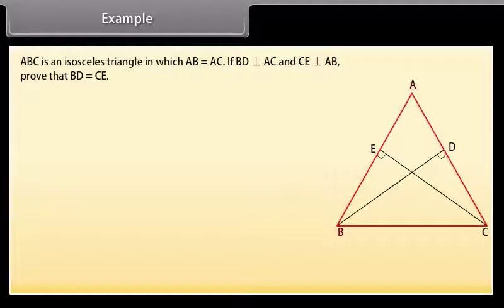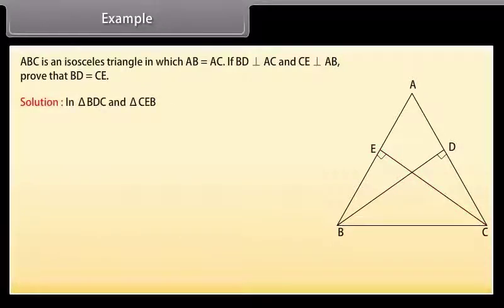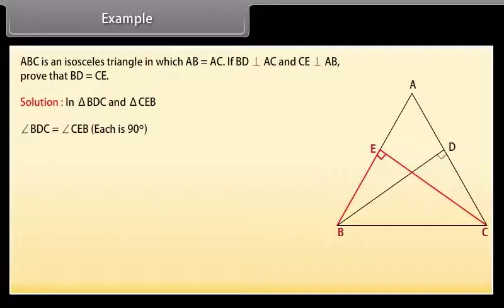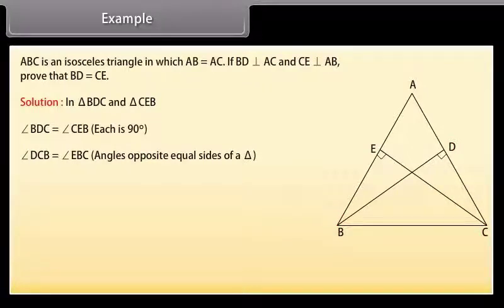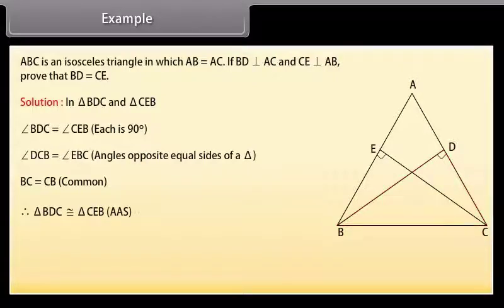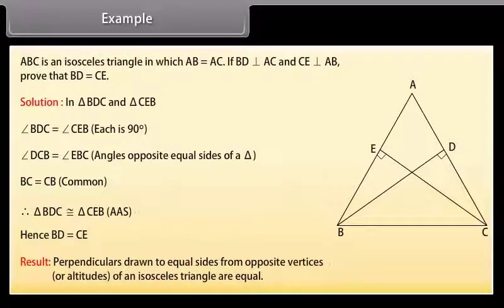ABC is an isosceles triangle in which AB is equal to AC. If BD is perpendicular on AC and CE is perpendicular on AB, prove that BD is equal to CE. Solution: In triangle BDC and triangle CEB, angle BDC is equal to angle CEB because each angle is 90 degrees, angle DBC is equal to angle ECB, and BC is equal to BC. Therefore, by AAS congruence rule, triangle BDC is congruent to triangle CEB. Hence, BD is equal to CE. This gives us the result that perpendiculars drawn to equal sides from opposite vertices — or altitudes — of an isosceles triangle are equal.